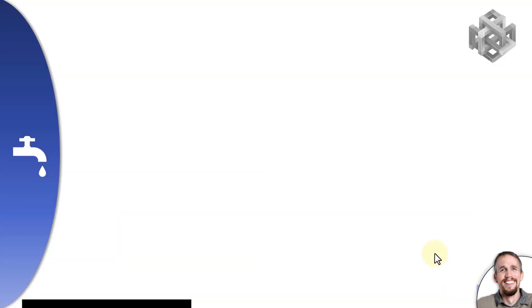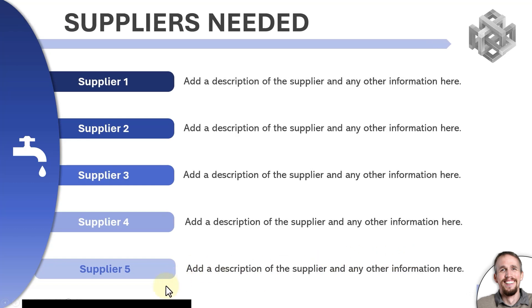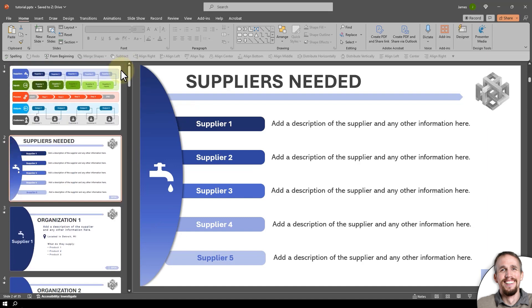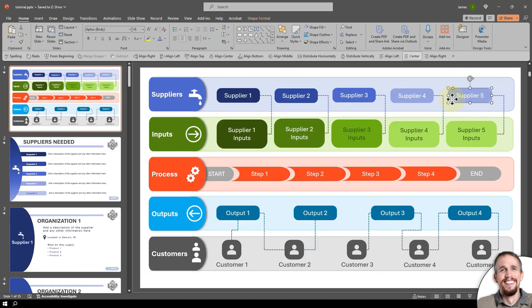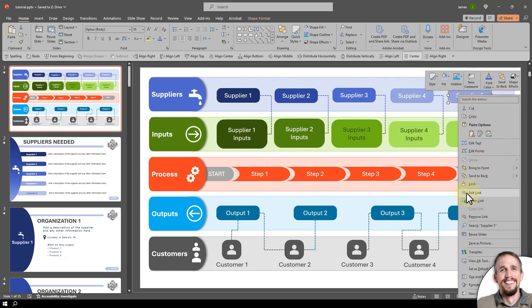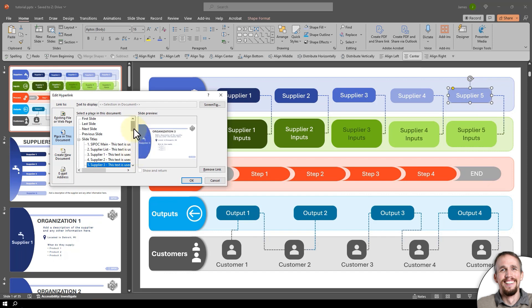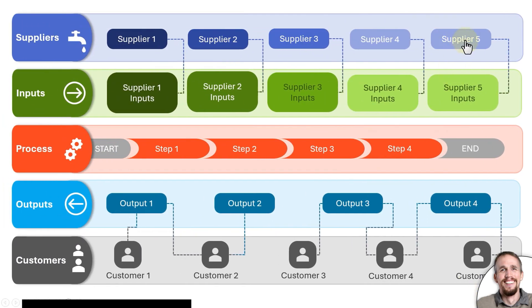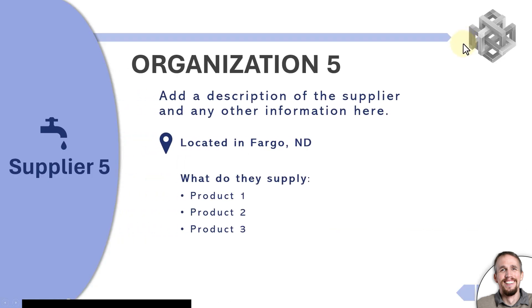Right-click and play this. Now clicking that will go to Supplier Five, and I can go back. I also need to select this Supplier Five element up here and go to Edit Link again, linking it to the Supplier Five slide we just created. Now when I play this I can click on Supplier Five and it works.